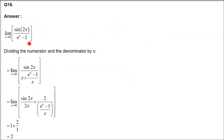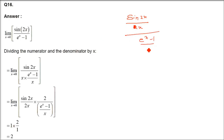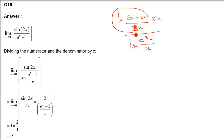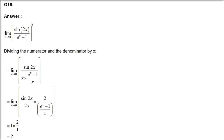Question 16: limit x→0 of sin(2x)/(eˣ - 1). Introduce x: sin(2x)/x and (eˣ-1)/x, with 2 introduced for sin(2x)/2x. So sin(2x)/2x → 1, (eˣ-1)/x → 1, leaving 2/1 = 2 as the answer.